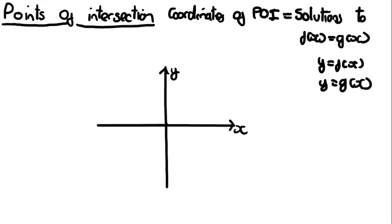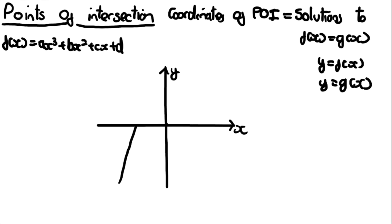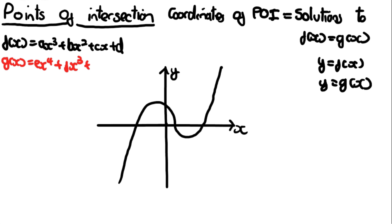Let's represent this graphically. Let's take a random cubic: f(x) = ax³ + bx² + cx + d. If you draw just a random cubic, it's going to look something like this. And let's draw a random quartic, g(x) = ex⁴ + fx³ + gx² + hx + i.